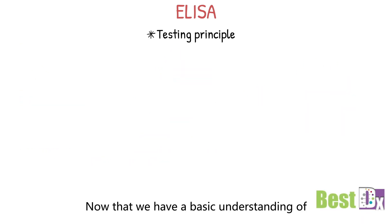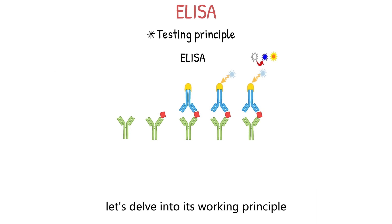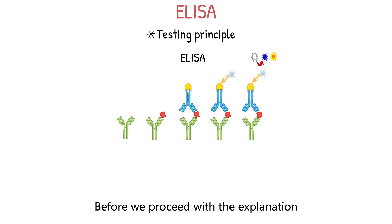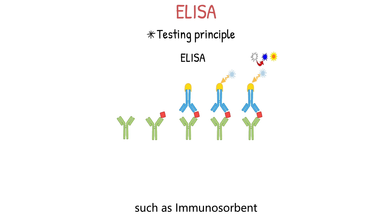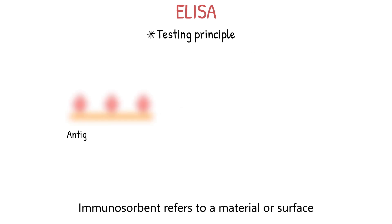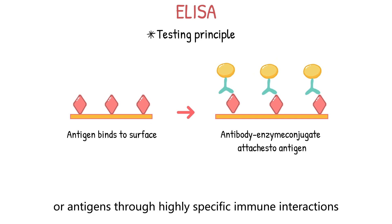Now that we have a basic understanding of what ELISA technology is, let's delve into its working principle in a clear and concise manner. Before we proceed, let's first familiarize ourselves with some concepts, such as immunoabsorbent. Immunoabsorbent refers to a material or surface capable of selectively binding specific antibodies or antigens through highly specific immune interactions.